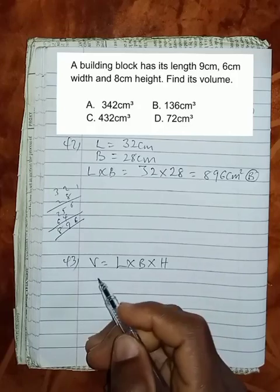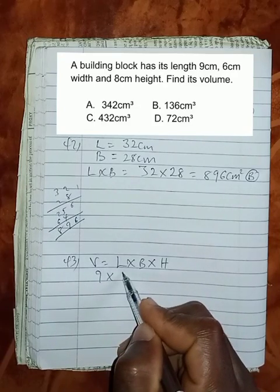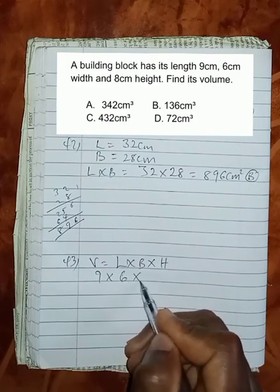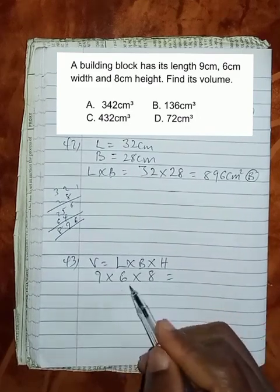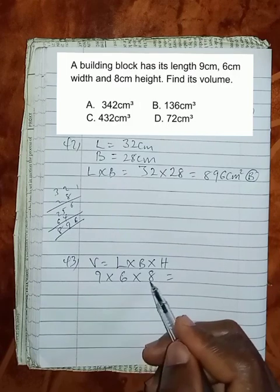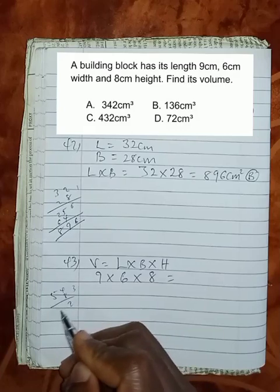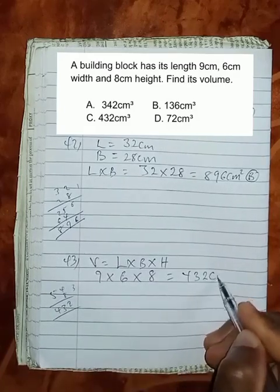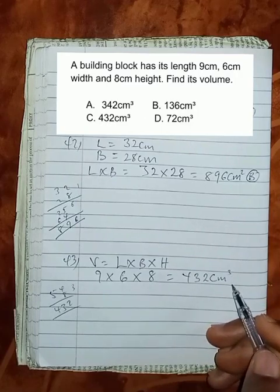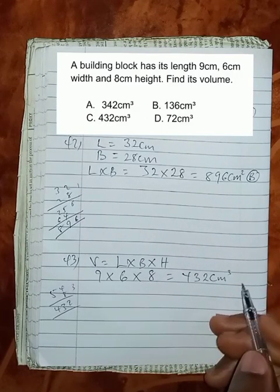We're told that the length is 9 times the breadth is 6, times the height is 8. 9 times 6 is 54. 54 multiplied by 8 gives us 432 cm cubed as the volume of the building block, which is C.